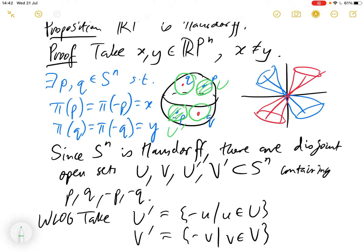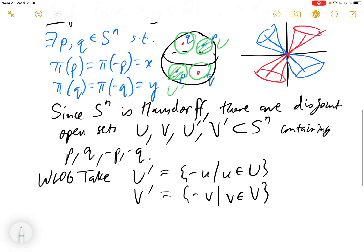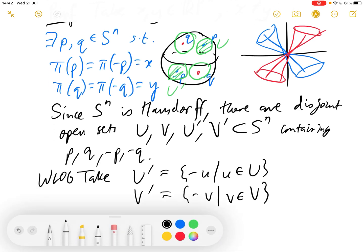And then we can say that, so we know that P and minus P are both in U union U' and P and minus P are not in the union of V and V'.